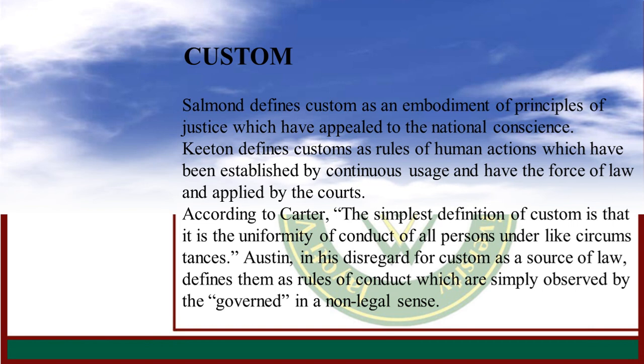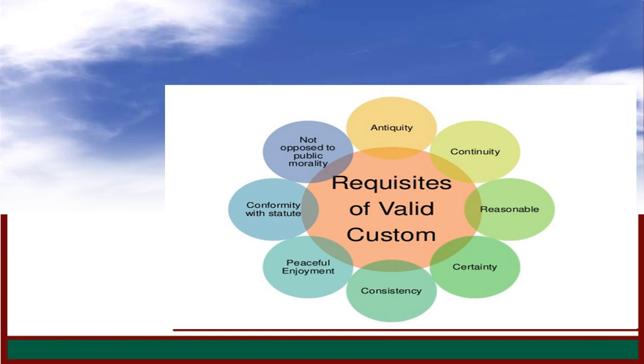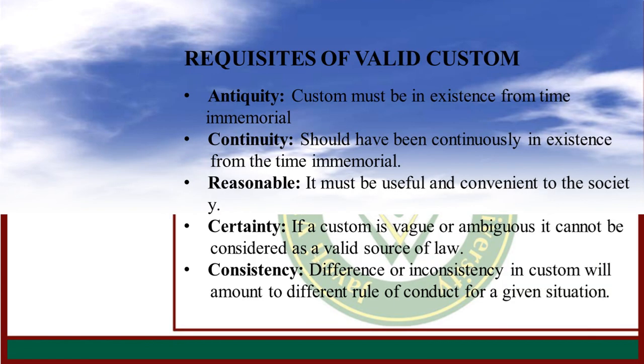There are two types of customs: social customs and legal customs. Here are the requisites of valid customs. First, Antiquity — a custom cannot be created in a day; it must be in existence from time immemorial. It must be of long standing. Unlike England, where customs must have existed from time immemorial, in India long usage and observation is enough. Thus, a twenty-year-old custom may be recognized.